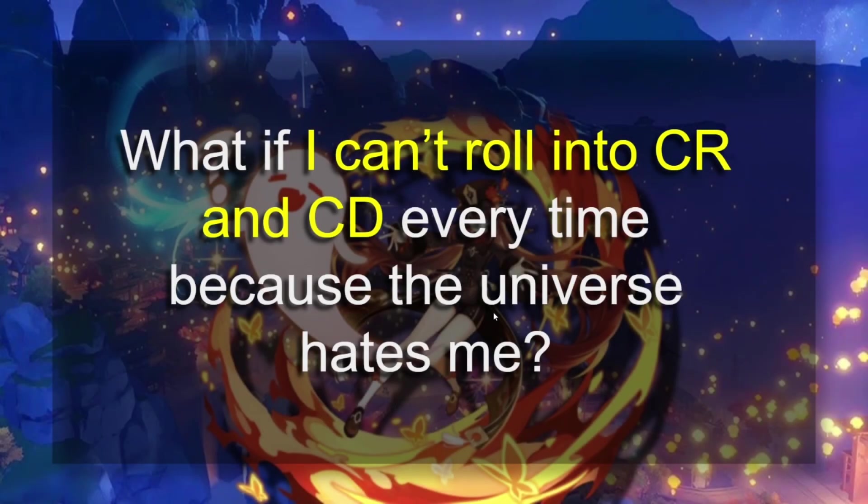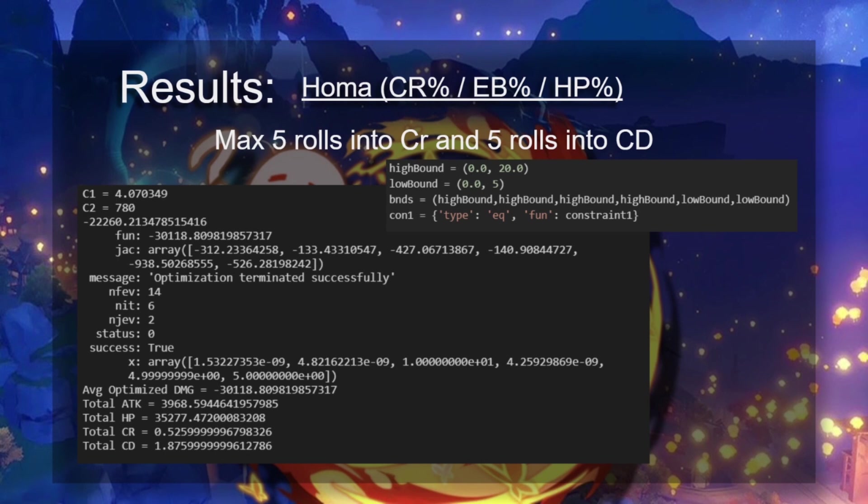Now, you might ask, what if I can't roll into crit rate and crit damage every time? Because, you know, stuff happens. So what I did here to answer this question is that I introduced a different bound and I said, okay, say you do have bad artifacts, and the maximum number of rolls that you can get into crit rate is five and the maximum number of rolls you can get into crit damage is also five. We can see that here. The low bound goes from zero to five and we put that in for crit rate and crit damage. Everything else can get 20 rolls.